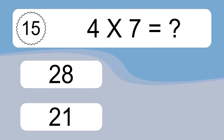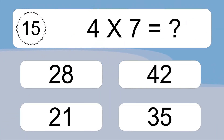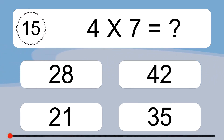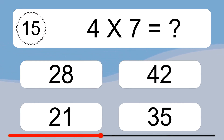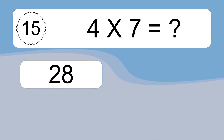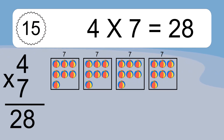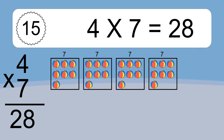4 times 7 equals what? 4 times 7 equals 28. We have 4 boxes, and each box has 7 colorful balls inside. If you count all the balls in all the boxes together, you will have 4 times 7 balls. This equals 28 balls.